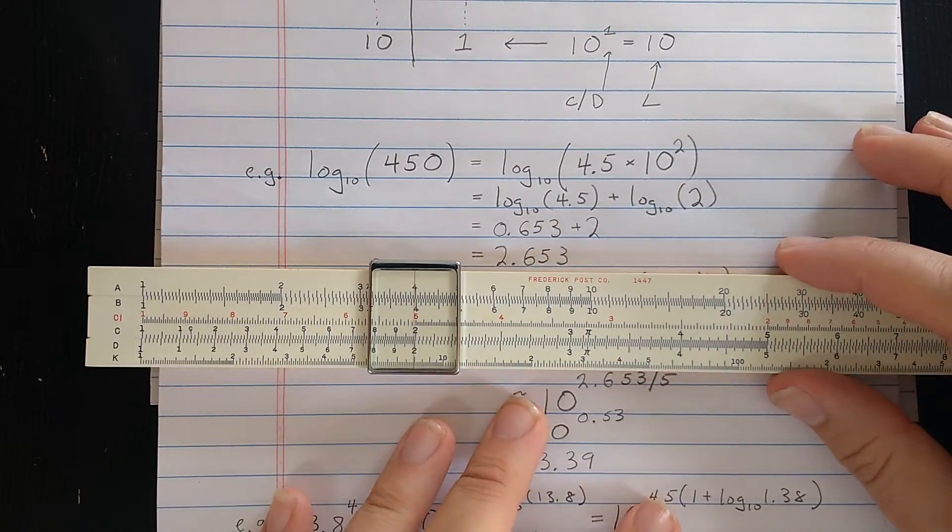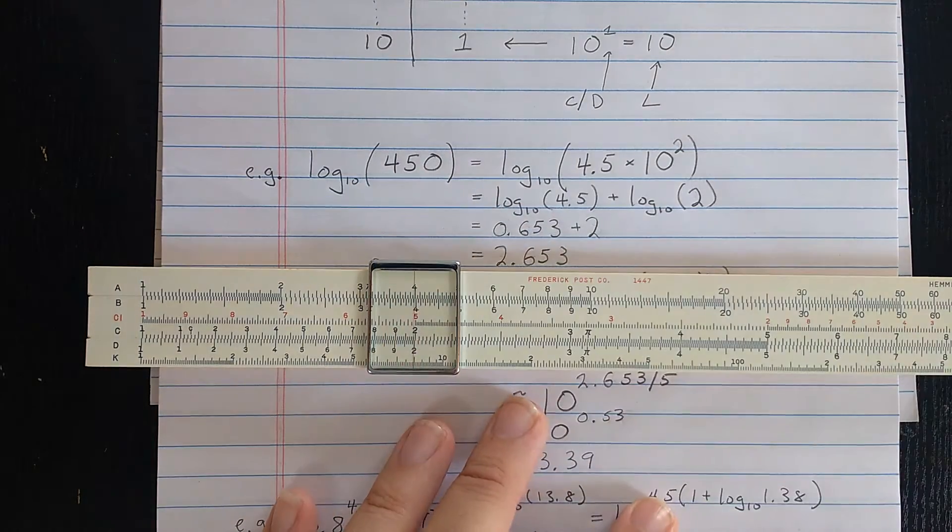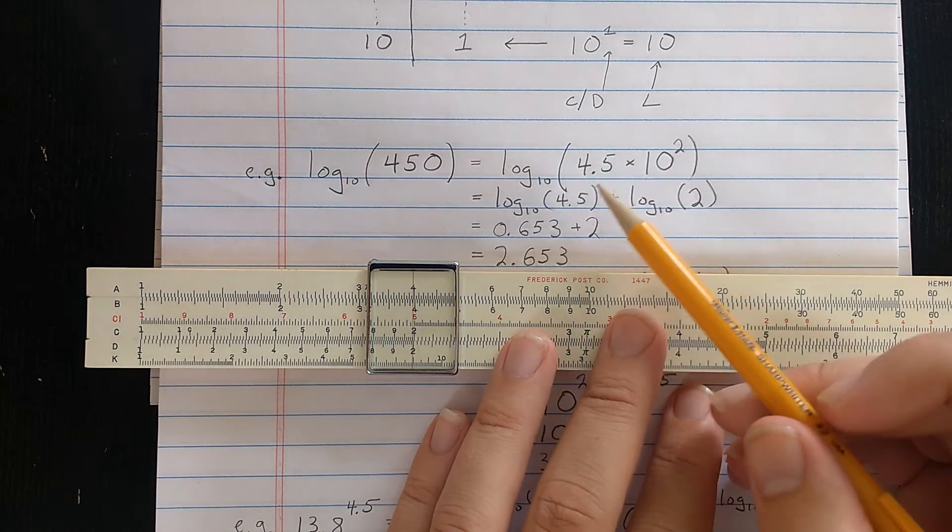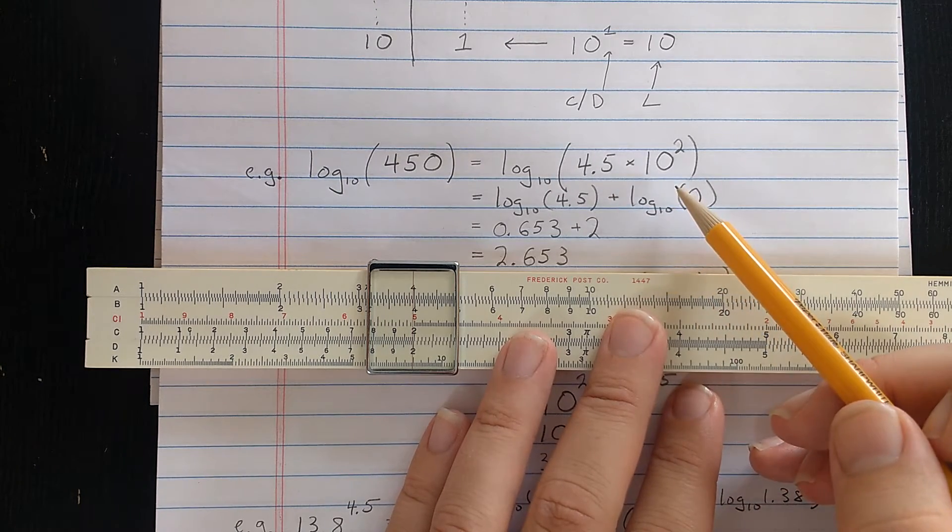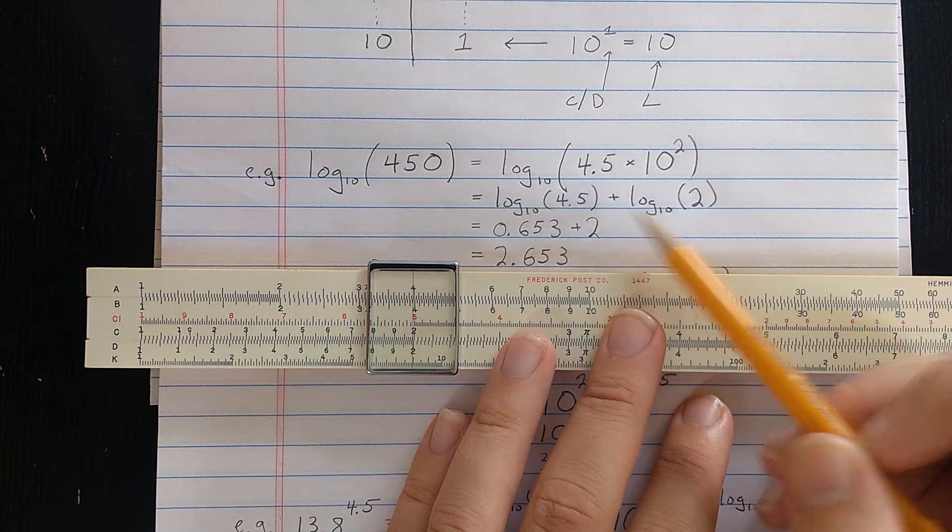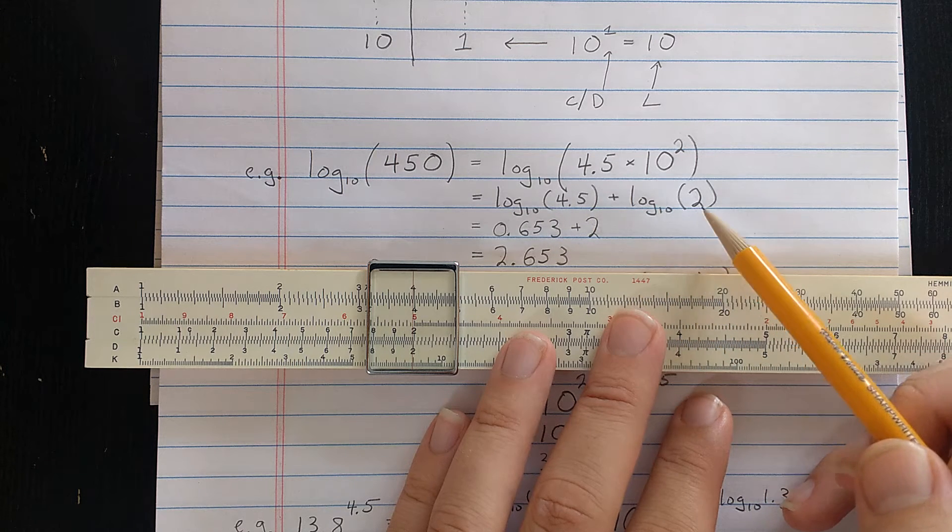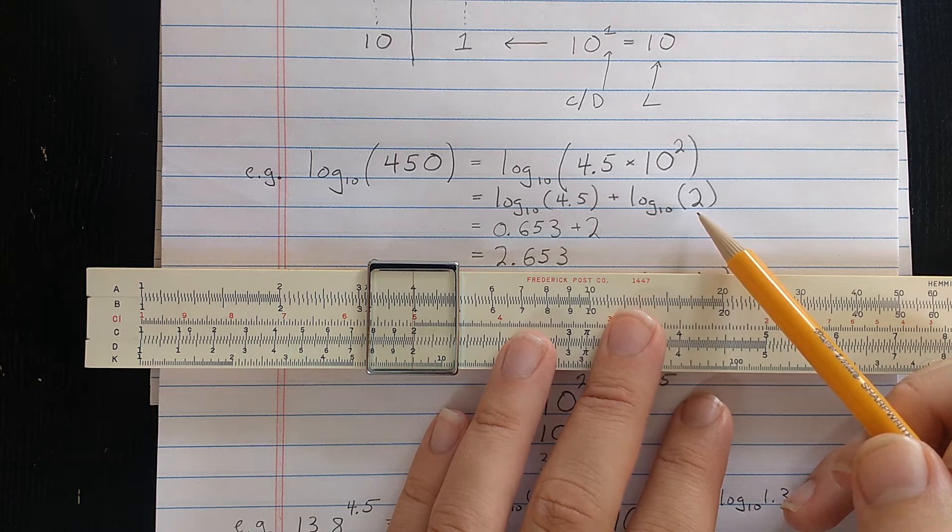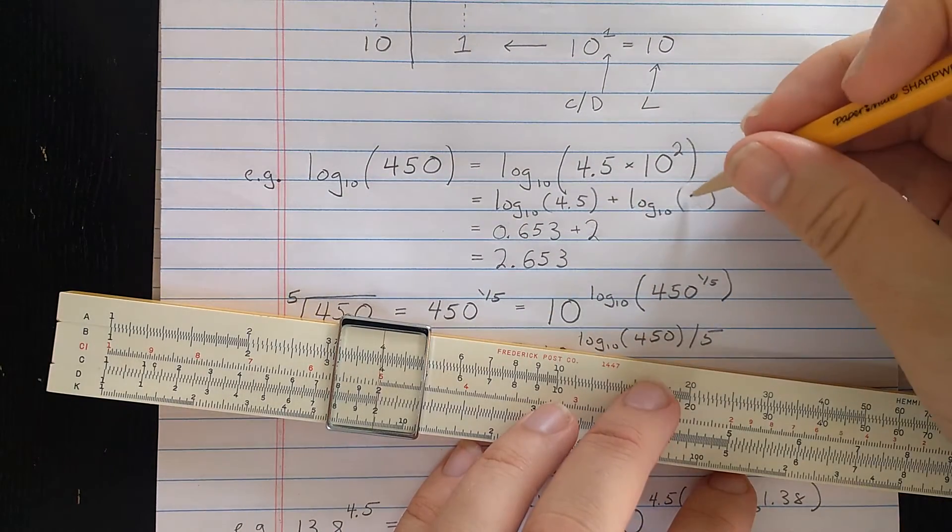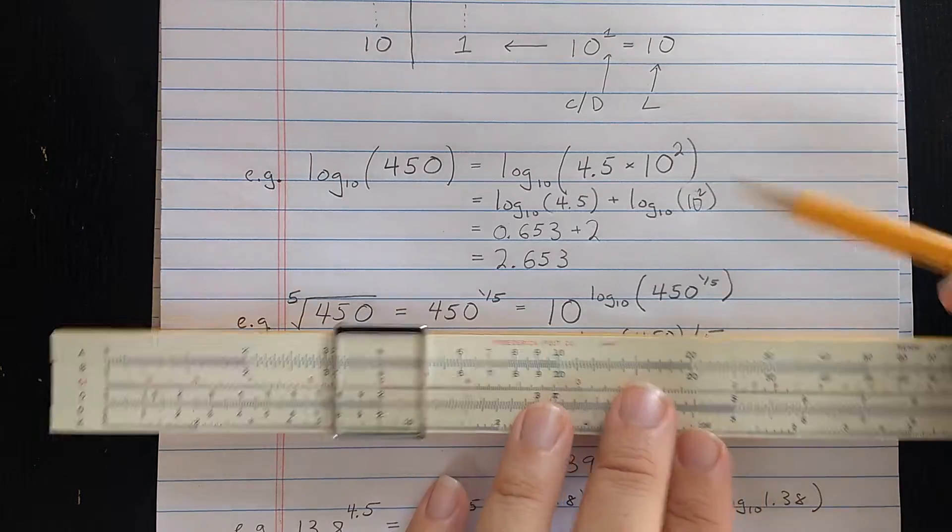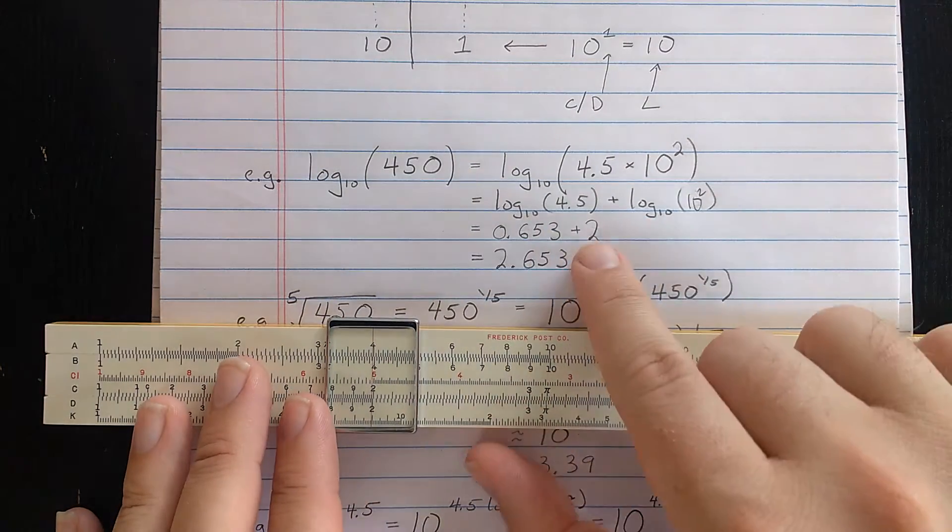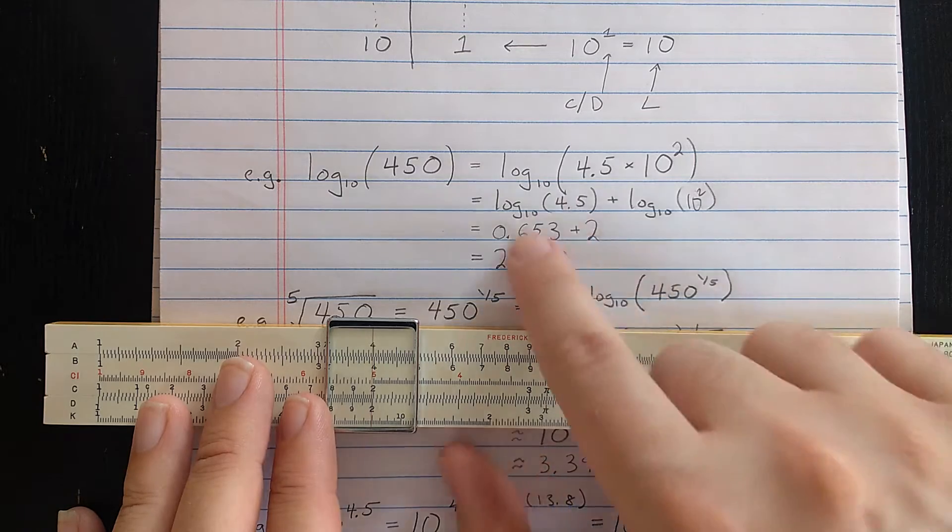Let's see how we can compute log with base 10 of 450. The main idea is I use scientific notation. So that's 4.5 times 10 to the 2. The logarithm splits that to log with base 10 of 4.5 plus log with base 10 of 10 to the 2. Of course, log with base 10 of 10 to the 2 is just 2. And then I use the L scale to find that fractional part.